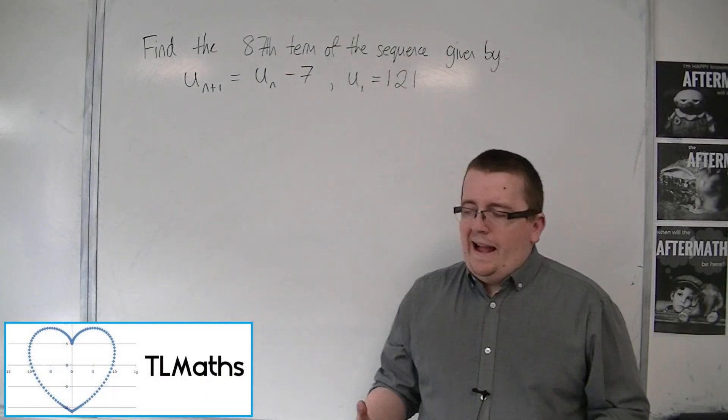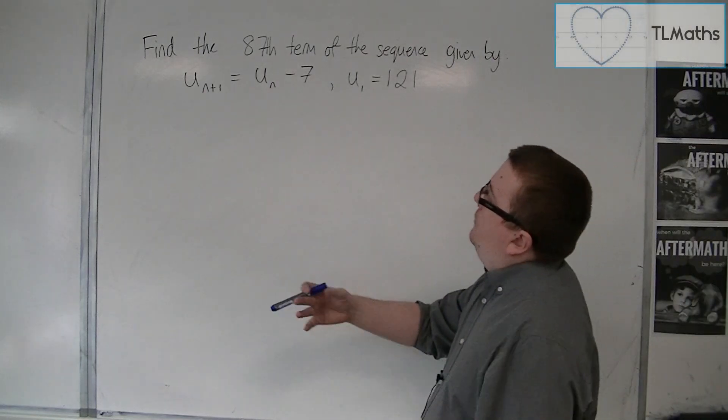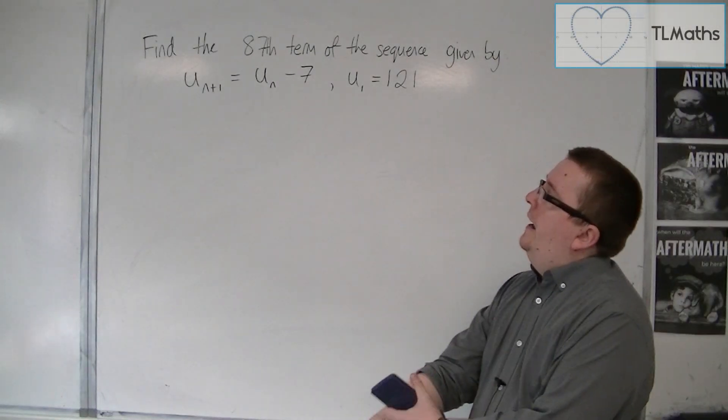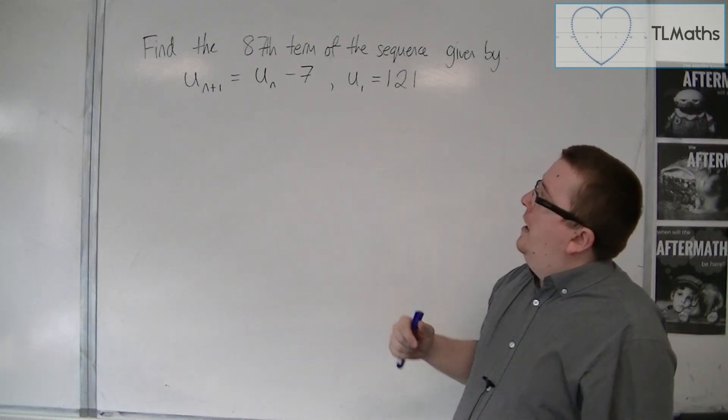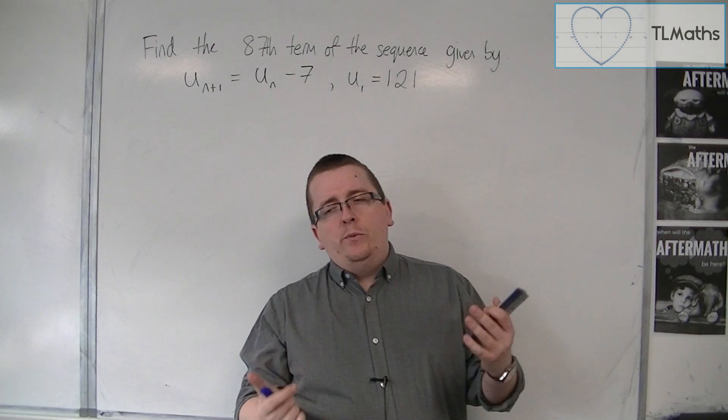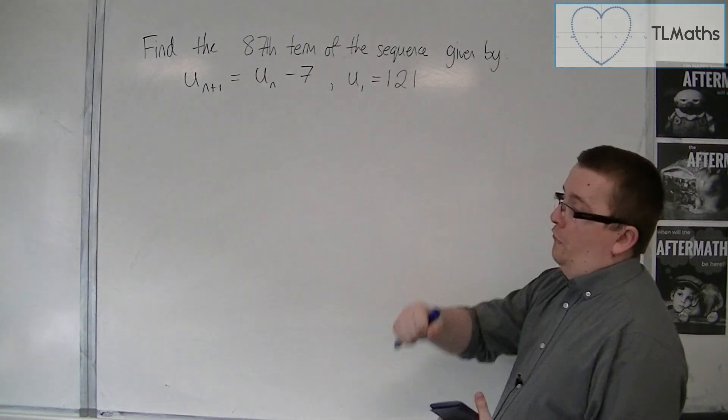Let's say that we have an inductive definition given to us by u_(n+1) = u_n - 7, and we're given that the first term is 121. If I was asked to find the 87th term, for example...